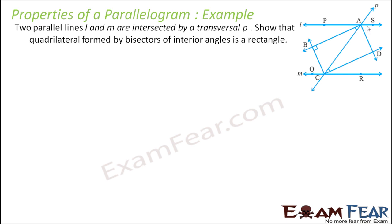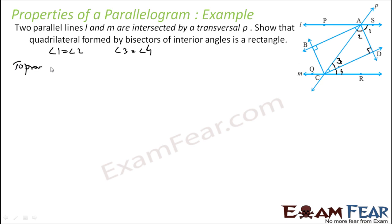This angle is equal to this angle — let me number these as 1 and 2. Similarly, these angles are equal to each other — let me number them 3 and 4. So it is given that angle 1 is equal to angle 2, and angle 3 is equal to angle 4. Let this be angle 5 — I have to prove that angle 5 is 90 degrees.